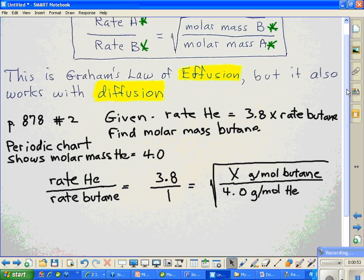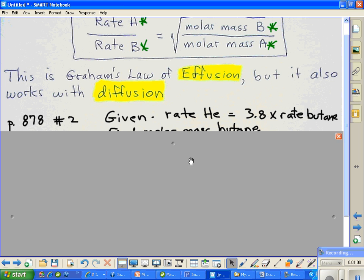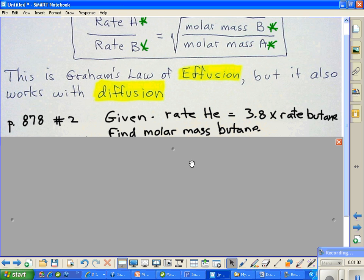I'm going to put up the shade so we can look at one part of this at a time. This is page 878 number 2, and we're given the rate of helium being 3.8 times the rate of butane. I'm going to make butane letter B and helium letter A. You could reverse these and this problem would work out exactly the same.